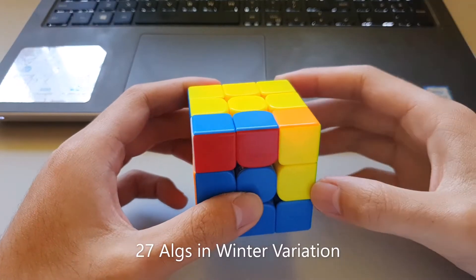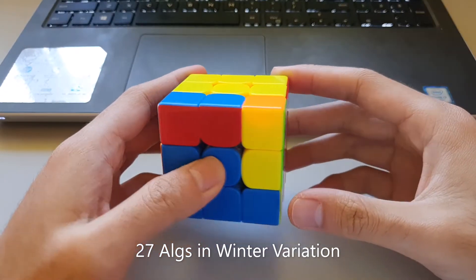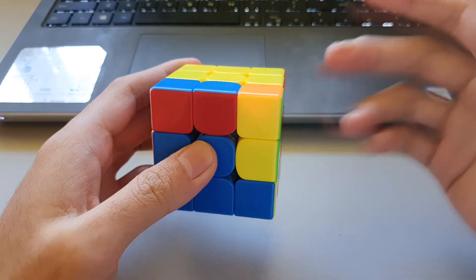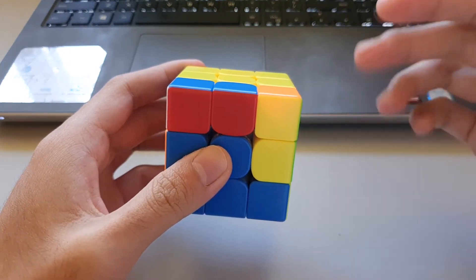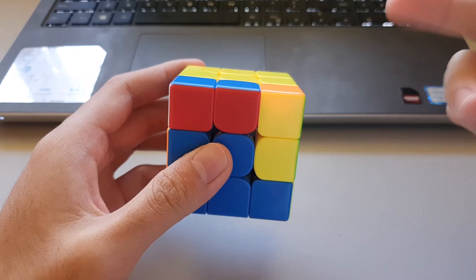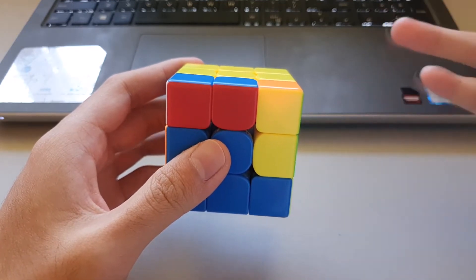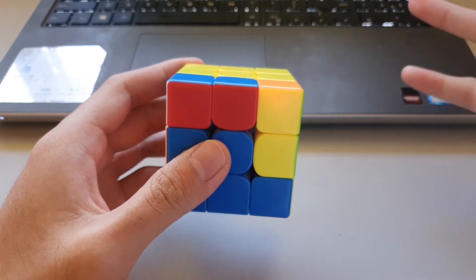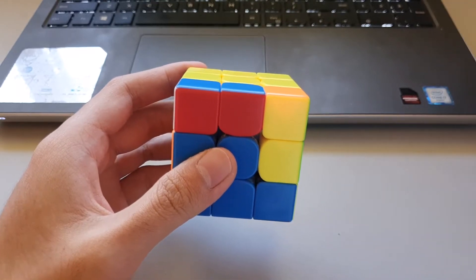There are almost 30 algorithms in winter variation and all of them actually have pretty easy algorithms, but the thing about winter variation is that it's kind of hard to recognize during an actual speed solve. So in this video I'll be going through the ones that are actually more straightforward to recognize and therefore more practical to learn.